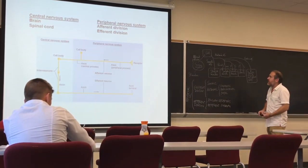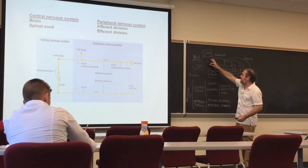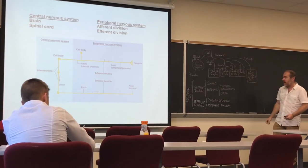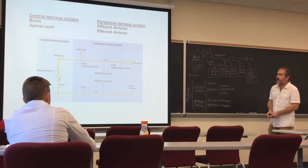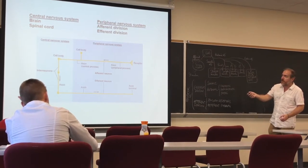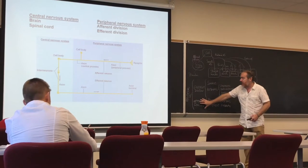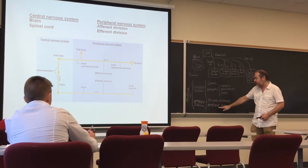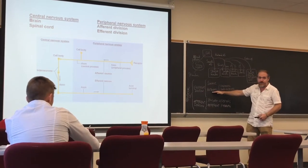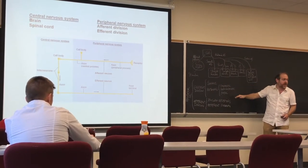Sensory receptors, the afferent pathway, the central nervous system, and all the branches of the autonomic nervous system — those are the nervous system. The nervous system divides into central and peripheral. The central nervous system is the brain and spinal cord. The peripheral nervous system is formed by the afferent and efferent divisions. The efferent division is formed by the somatic and autonomic nervous systems, and the autonomic includes sympathetic, parasympathetic, and enteric.